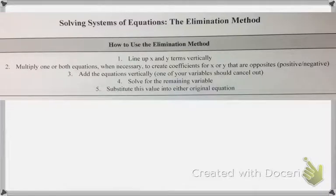To use the elimination method, the first thing you need to do is line up your x and y terms vertically. Then, you need to multiply sometimes one, sometimes both, or sometimes neither.